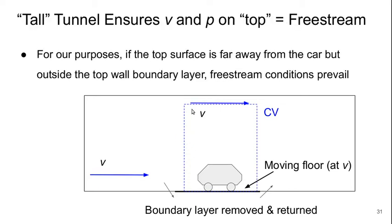We would use a very tall wind tunnel to ensure that the velocity and pressure on the top are the free stream. In 3D this would also mean that on the sides we would need to be very far away from our object too. Essentially, if the top surface is far away from the car but still outside the top wall boundary layer, then free stream conditions will prevail there.